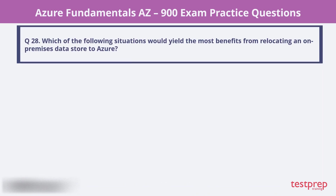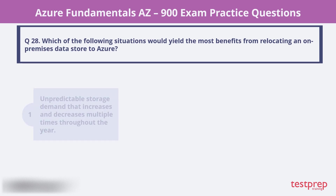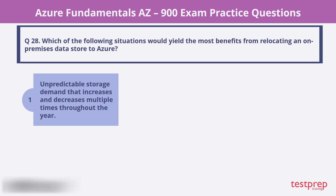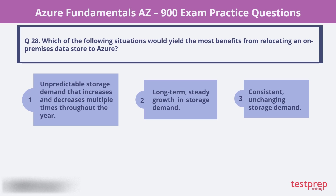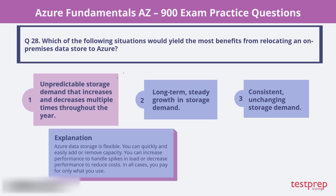Question 28. Which of the following situations would yield the most benefits from relocating an on-premises data store to Azure? 1. Unpredictable storage demand that increases and decreases multiple times throughout the year. 2. Long-term, steady growth in storage demand. 3. Consistent, unchanging storage demand. The correct choice is 1. Azure Data Storage is flexible. You can quickly and easily add or remove capacity, increase performance to handle spikes and load, or decrease performance to reduce costs. In all cases, you pay for only what you use.